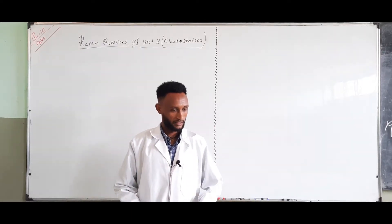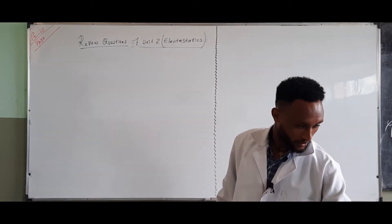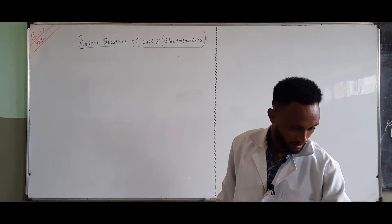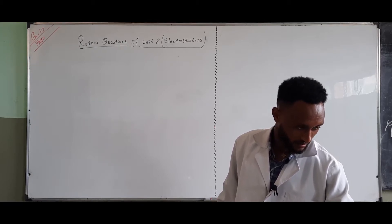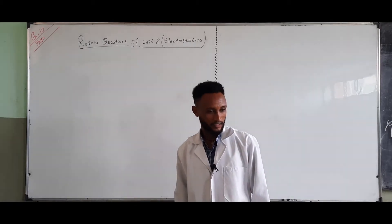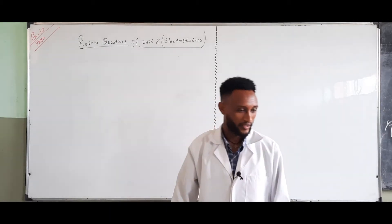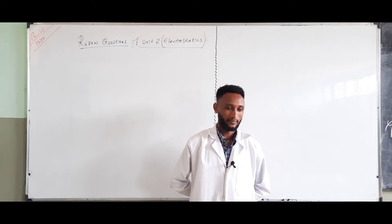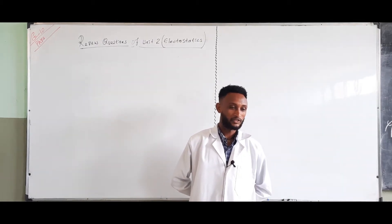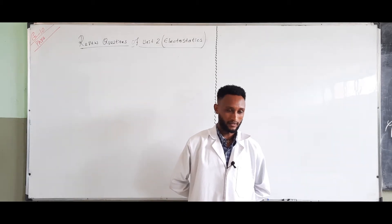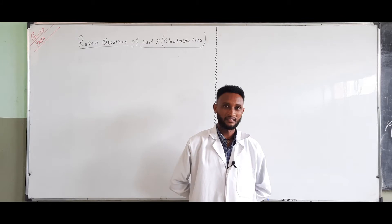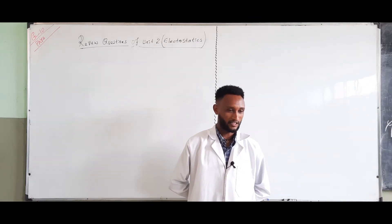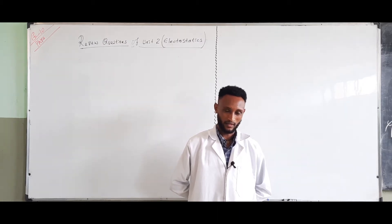Review question of unit 2, question number 6. See your textbook page 79. An electron travels horizontally at a velocity of 5 times 10 to the power of 6 meters per second in a vacuum between two charged plates that are 100 millimeters long and 20 millimeters apart, to which a potential difference of 30 volts is applied. The charge on the electron is 1.9 times 10 to the power of minus 19 coulombs and the mass of the electron is 9.1 times 10 to the power of minus 31 kilograms.